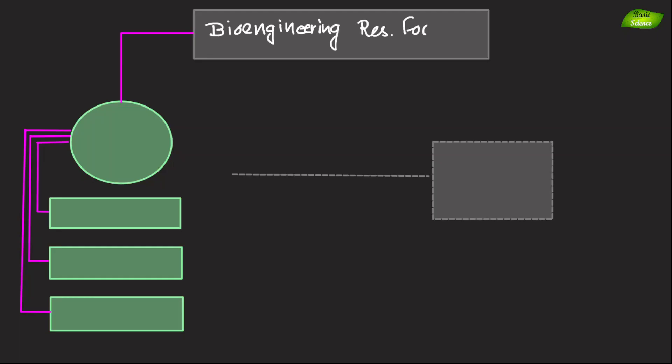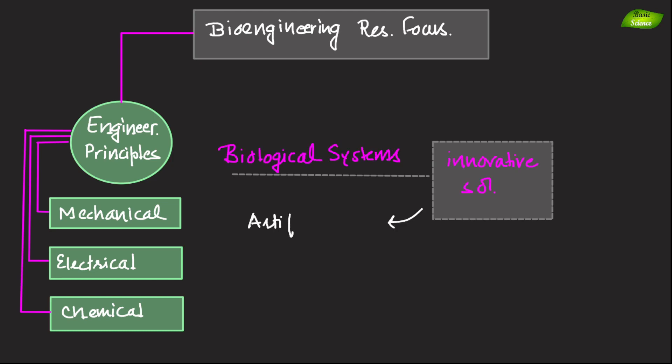Bioengineering research focuses on integrating engineering principles such as mechanical, electrical, and chemical with biological systems to develop innovative solutions such as artificial organs, biosensors, or bio-inspired materials.